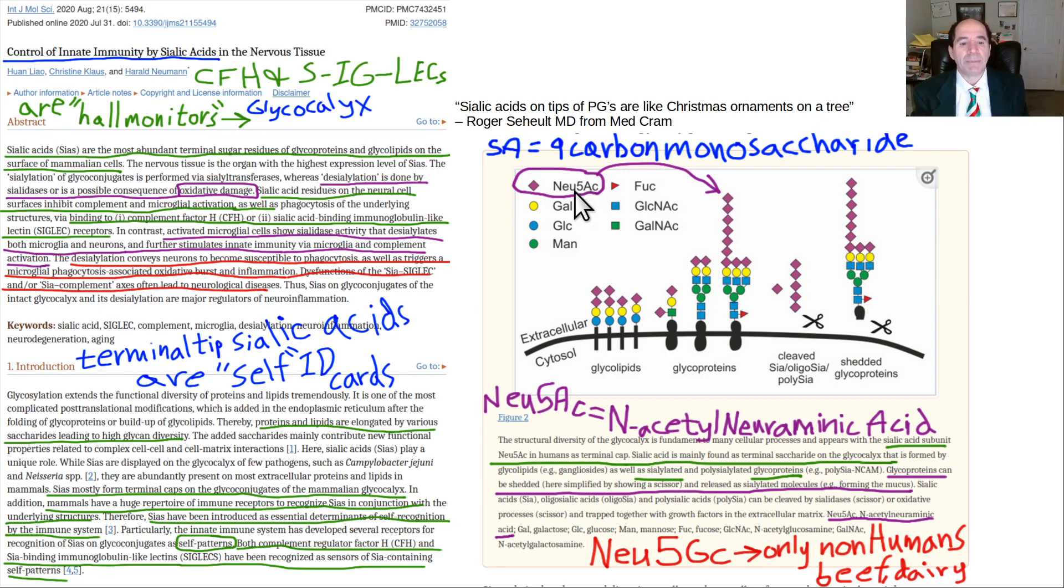The problem is when we eat beef and dairy. They produce a different type of sialic acid called Neu5GC. The key difference is the human one, Neu5Ac (A as in human) is normal. Neu5GC (G like gorilla) is abnormal. That's relevant because our gut is not as smart as our immune system.